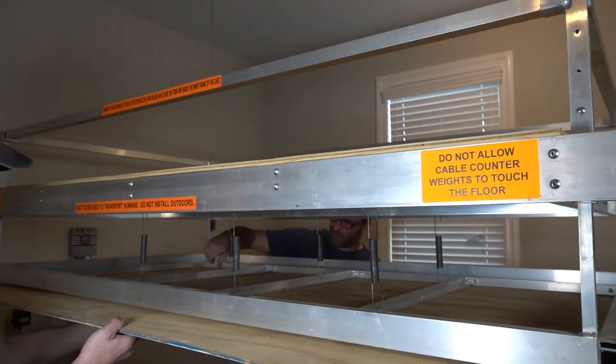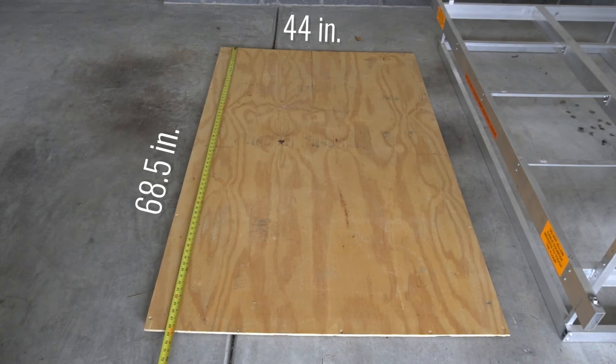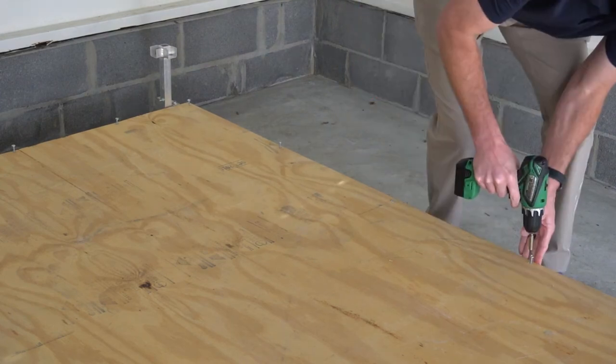Cut a sheet of 3-8 plywood to 68 and a half inches long and 44 inches wide and attach it to the cart assembly. Use the supplied self-tapping screws.